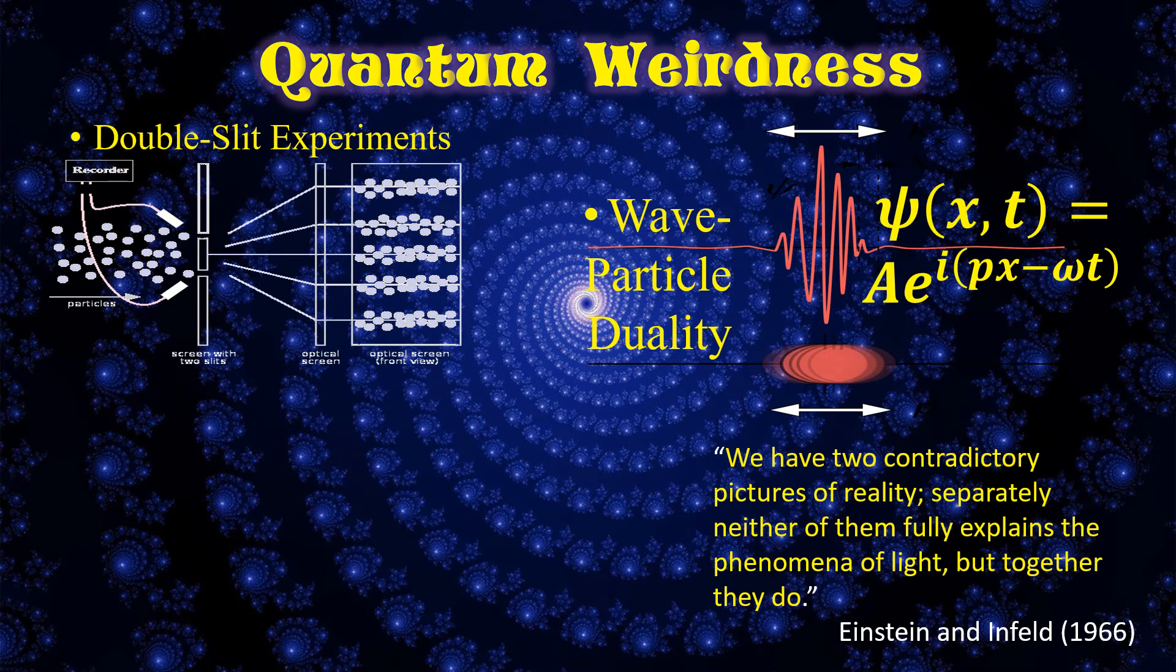The wave-particle duality is deeply embedded into the foundations of quantum mechanics, because all the information about a particle is encoded in its wave function that evolves according to the Schrödinger equation. Even for particles with mass, this equation has solutions that follow the form of the wave equation.